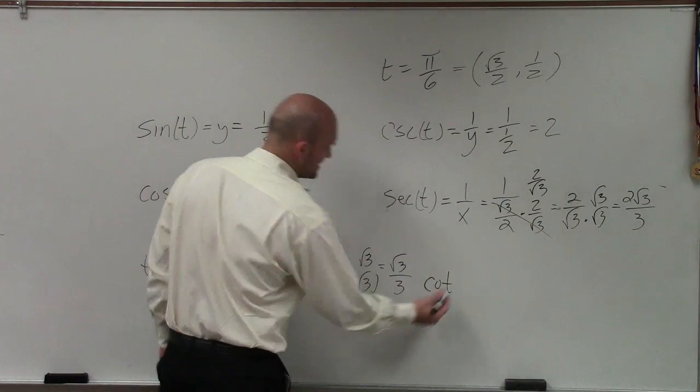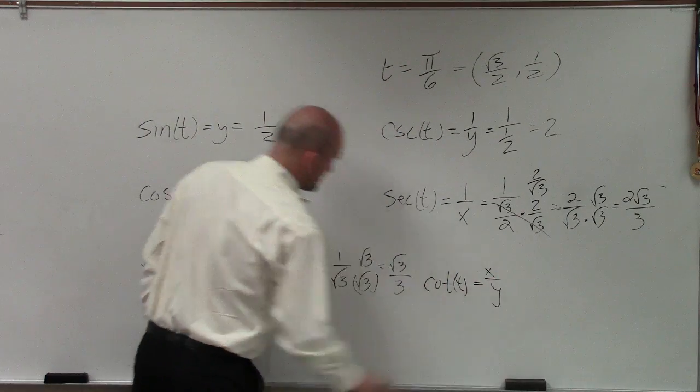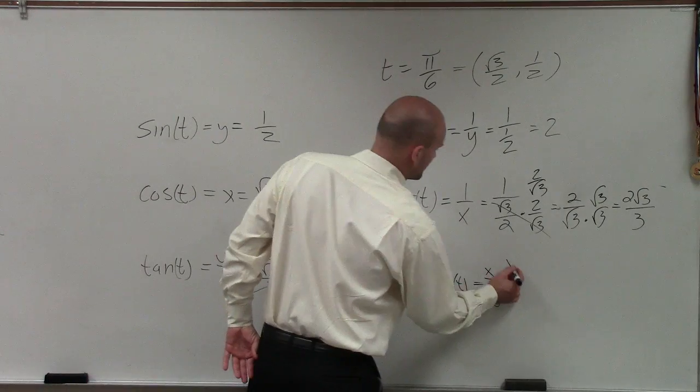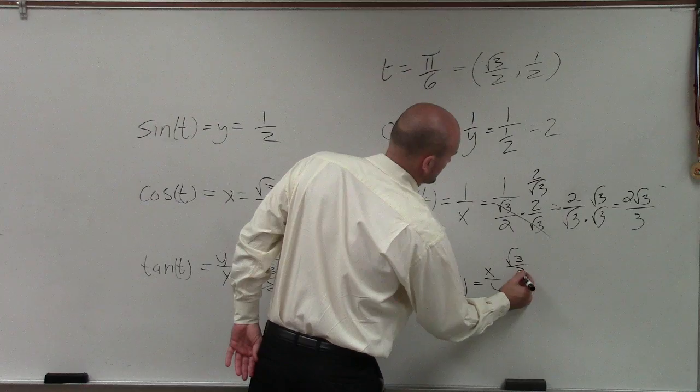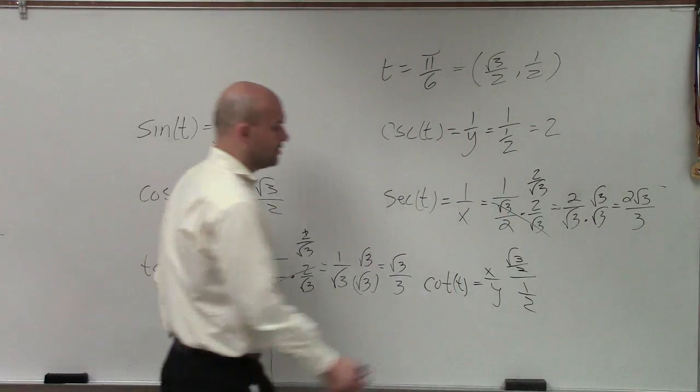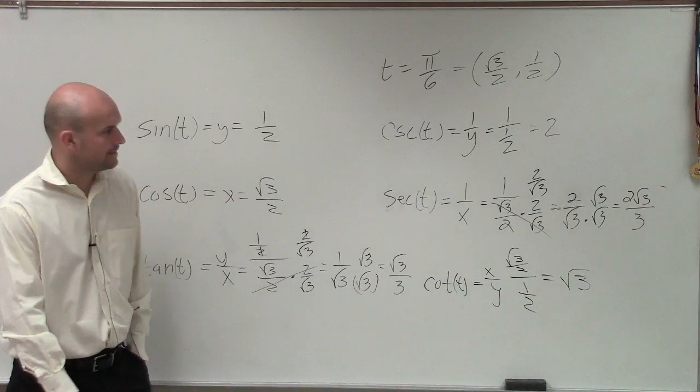And the last one is cot, better known as cotangent, which is now x over y. So now that's going to be square root of 3 over 2 divided by 1 half. If you multiply by the reciprocal on the top and the bottom, you'll see that the final answer is just square root of 3.